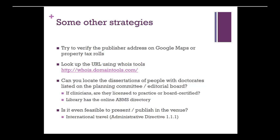There are some other strategies beyond just the Think, Check, Submit framework — a little advanced, but worth knowing. You can try to verify the publisher address on Google Maps or through property tax records. In the United States, municipalities may be required to have publicly searchable property tax records. Sometimes Google Maps has really good information — a colleague looking up a supposed publication opportunity found that the street view showed it was just an apartment building in the suburbs, which raises a red flag. You can also look up the URL using Whois tools, although if privacy was requested you may not get any information, but sometimes you can find out who purchased a custom URL.